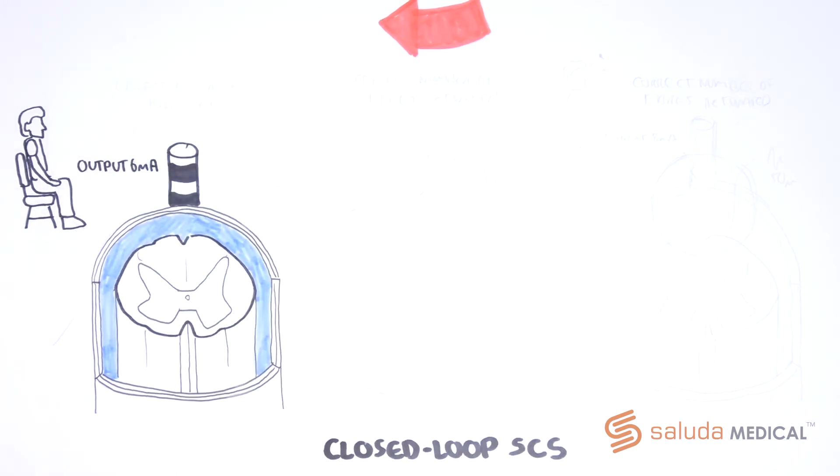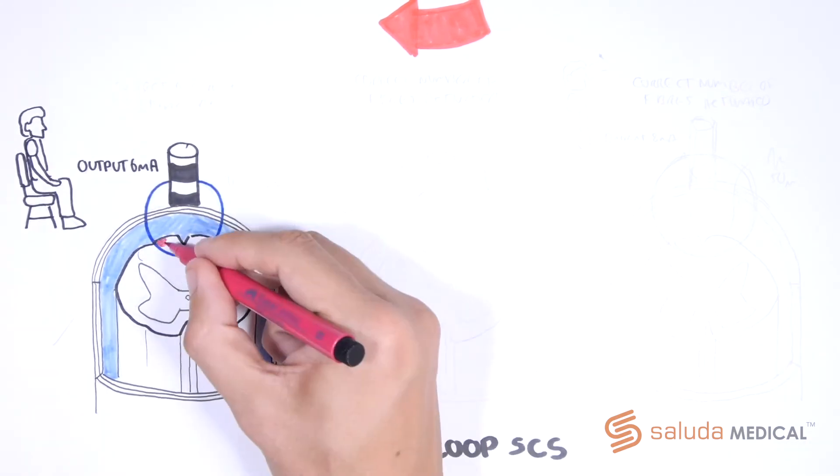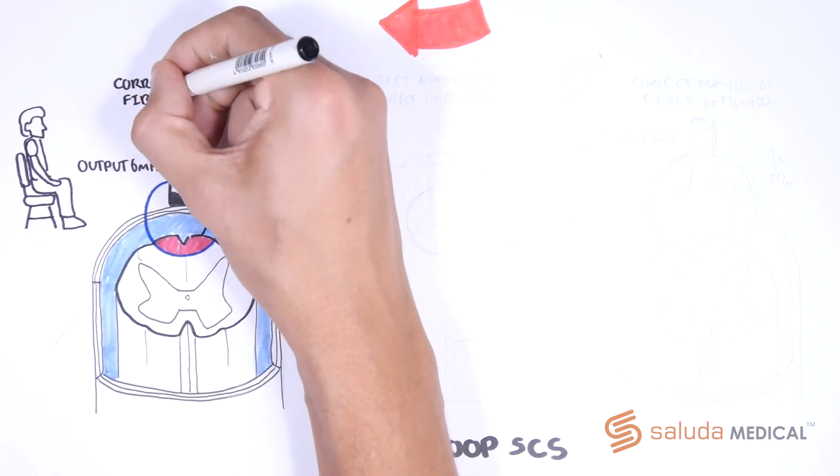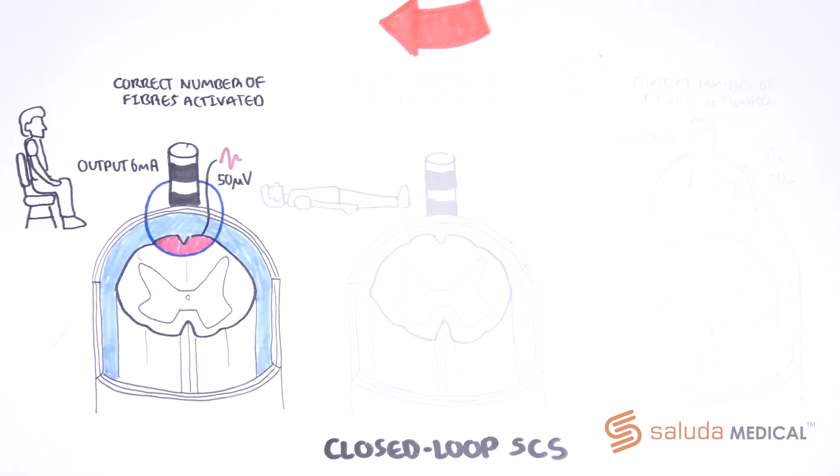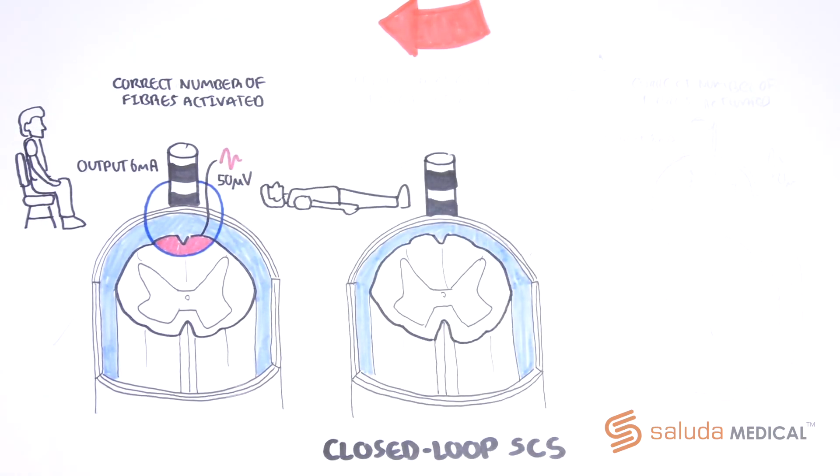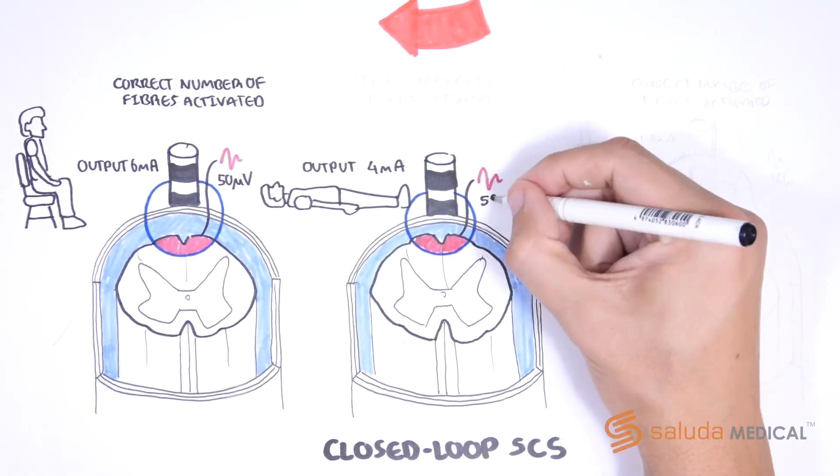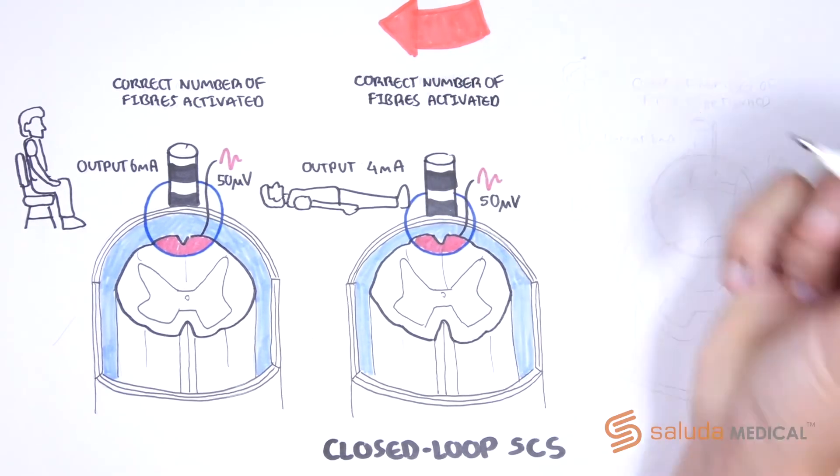Now, in the same situation where 6 mA results in a desired 50 µV ECAP in one moment, as the distance from the lead to the spinal cord is reduced, which would cause the ECAP amplitude to start increasing, the system measures this change and adjusts the stimulus output to maintain the same level of activation with the patient lying down.